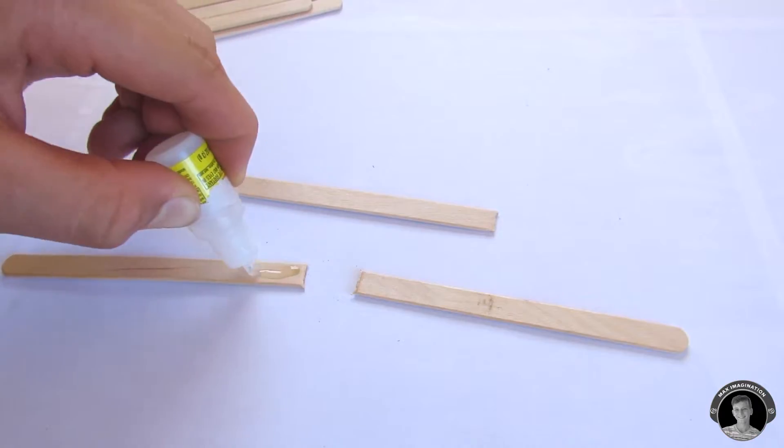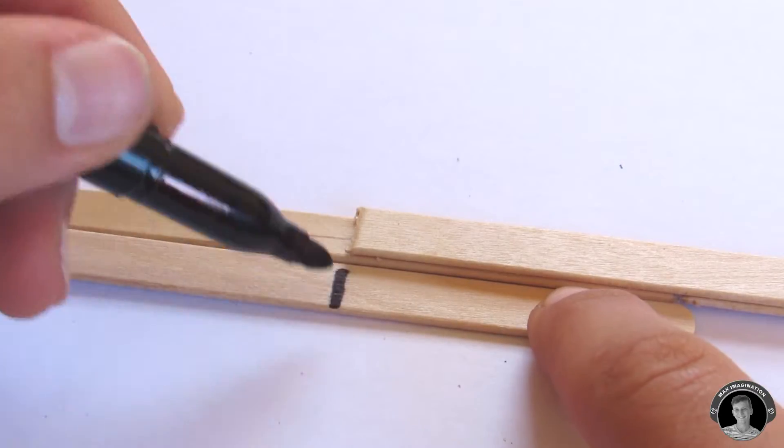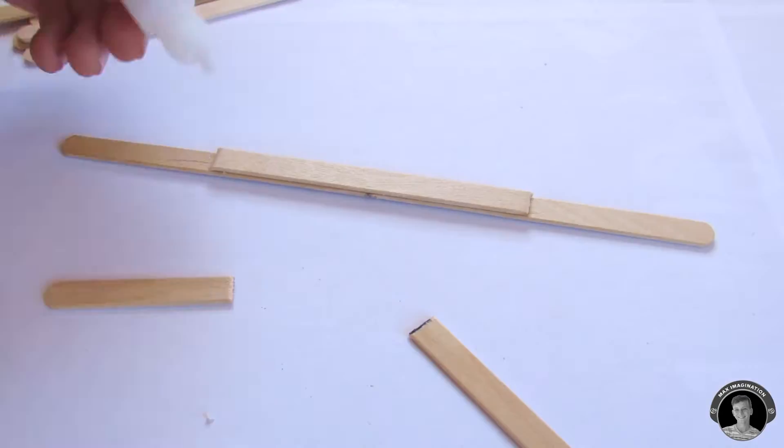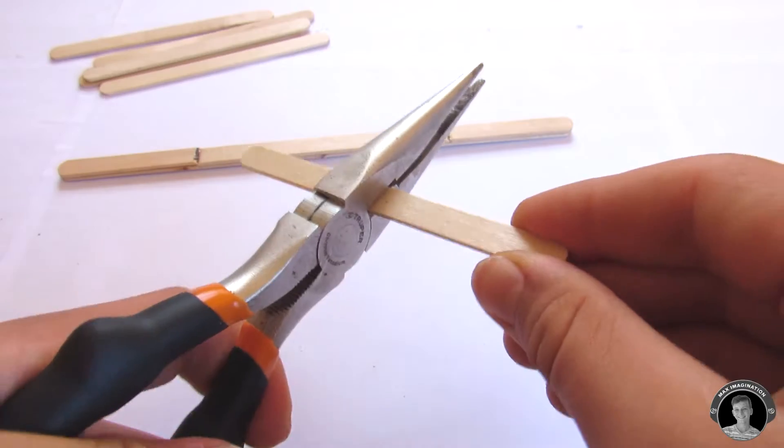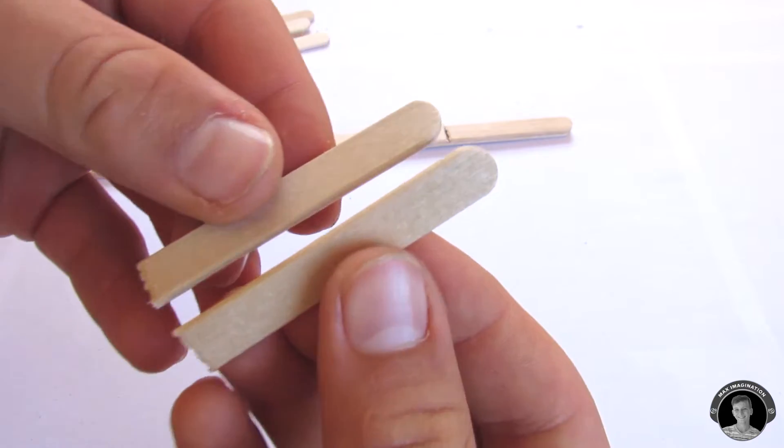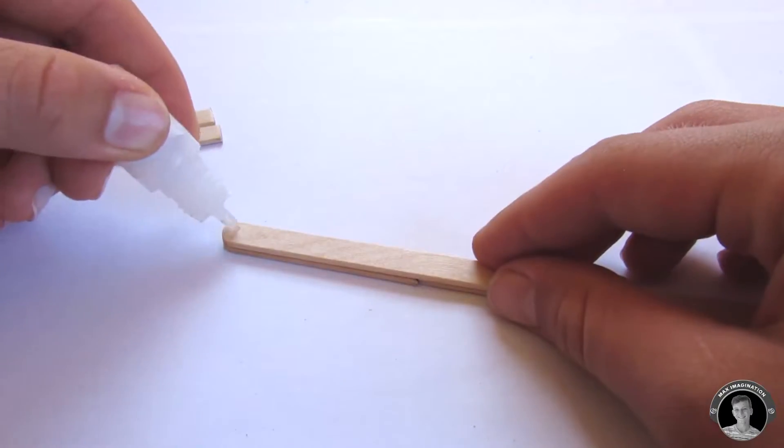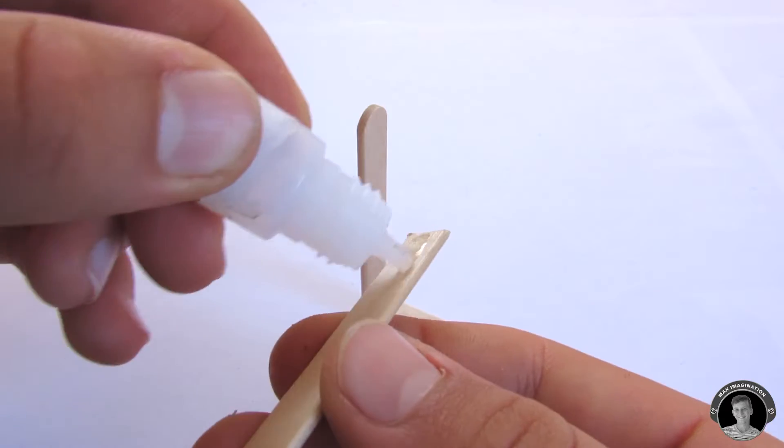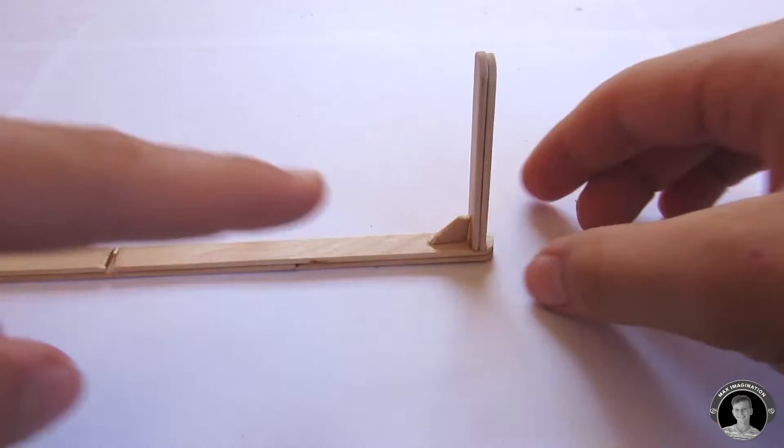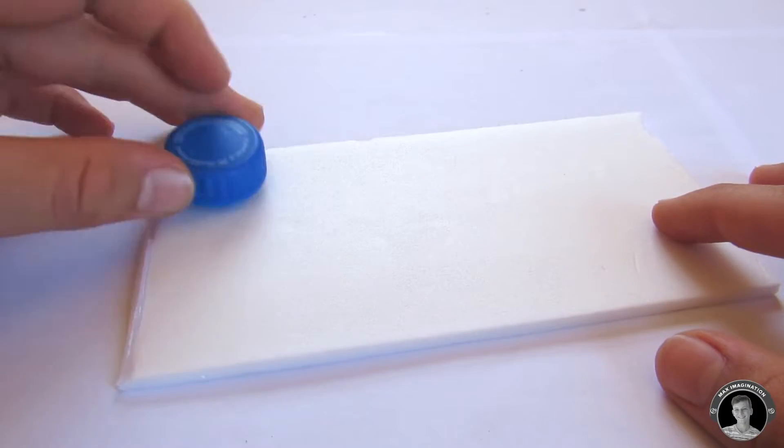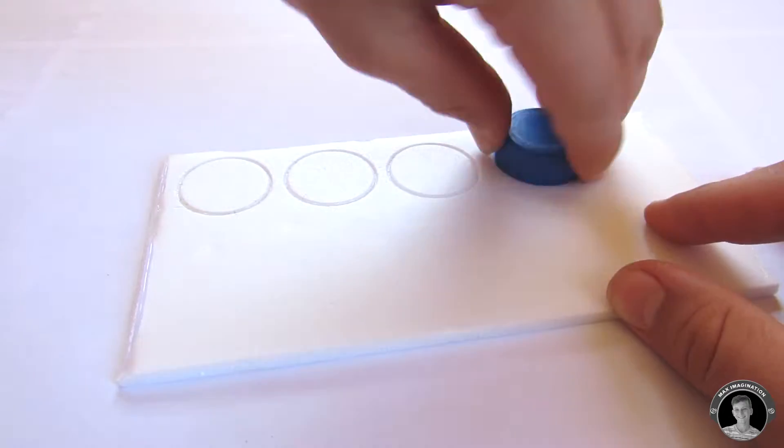Let's start out by making the frame. Then from a piece of poster board, we're going to cut out some circles to the size of a bottle cap.